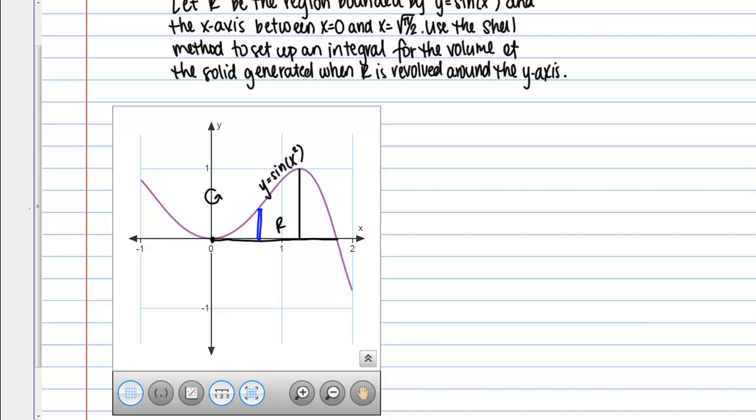As our next step, I'm going to write down the general formula for the shell method around the y-axis. That looks like this: V equals the integral from A to B of 2π R(x) H(x) dx.